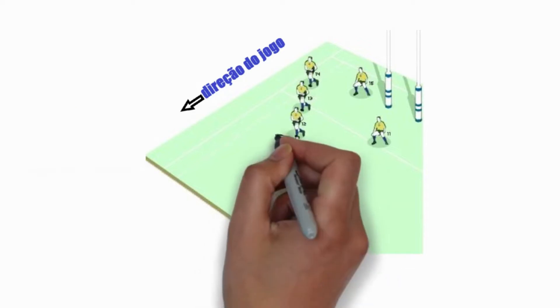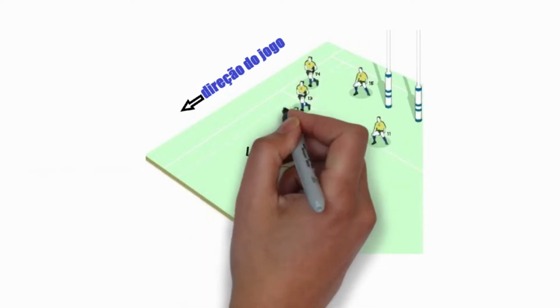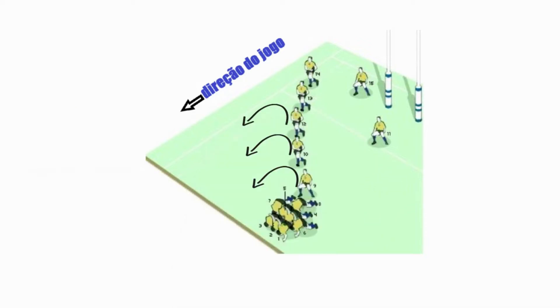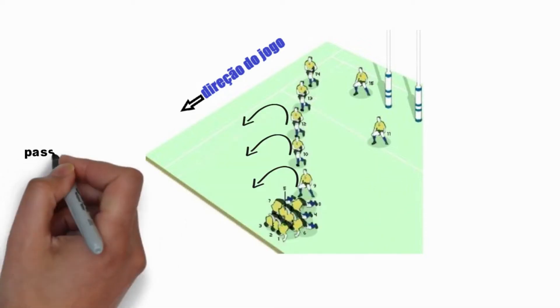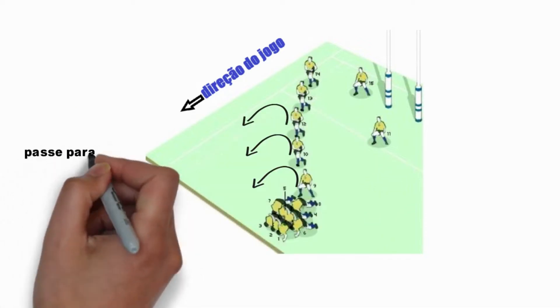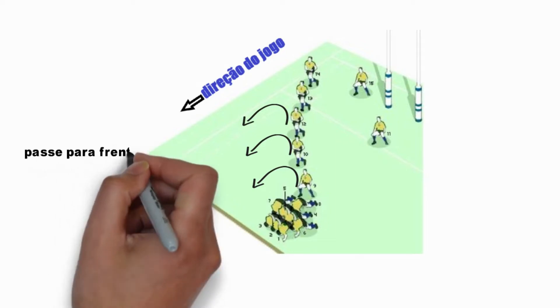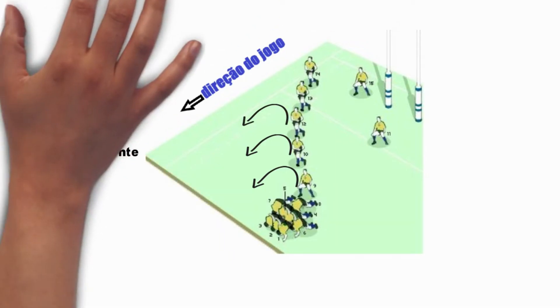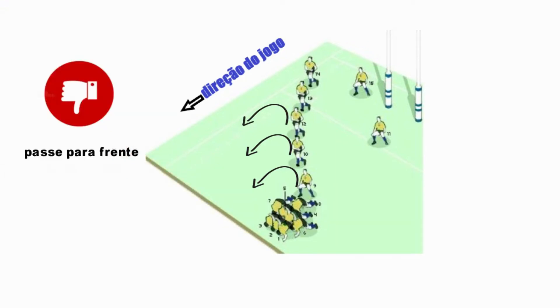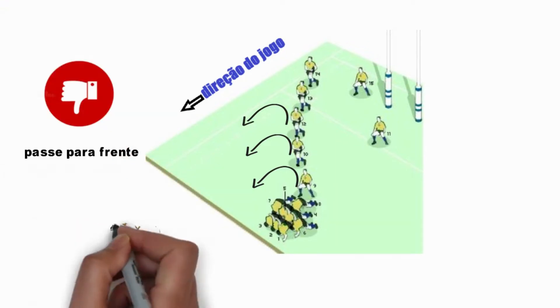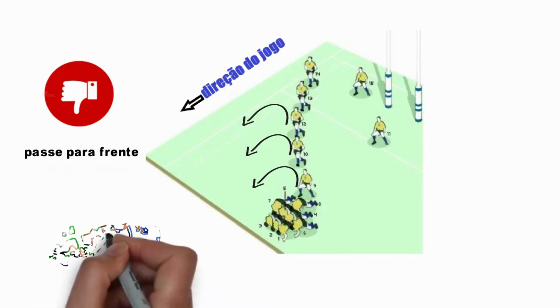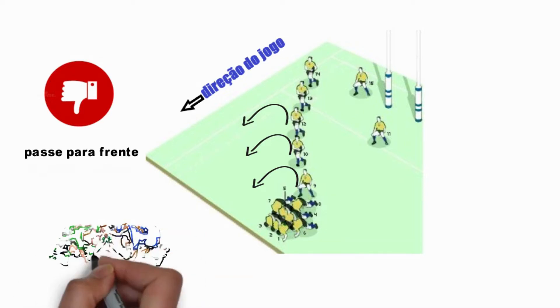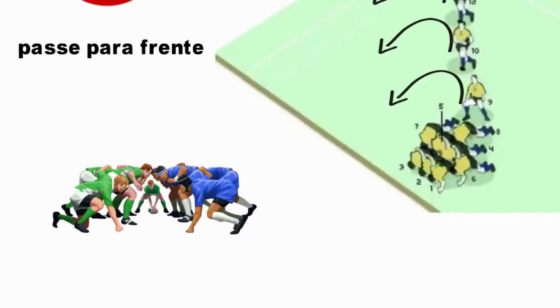Agora, se a bola for lançada ou cair em direção ao ataque do portador da bola, é considerado um passe para frente, ocasionando uma infração leve. Nesse caso, o reinício será através de um scrum.